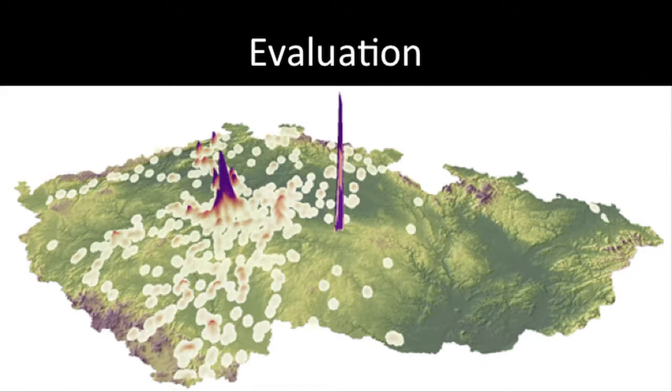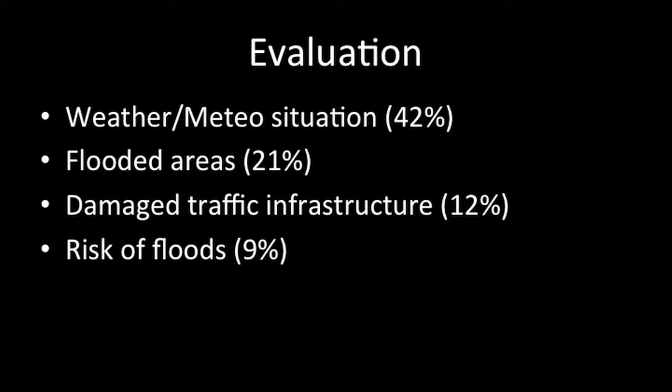We actually learned a lot from this. The evaluation showed a spatial distribution of reports with a peak in the middle of the country — a highland area where there were no floods, but which is the geographical center. So we realized that even though you have a super tool, you're still working with people who are not always comfortable with computers. They forgot to click on the map where it was happening. We had a lot of reports without a location. The first lesson: put more guidelines. The second lesson: what people want to talk about is what is happening on the ground — weather situations, flooded areas, risk of floods. Mainly they were reporting these things, sharing information, not asking for help.